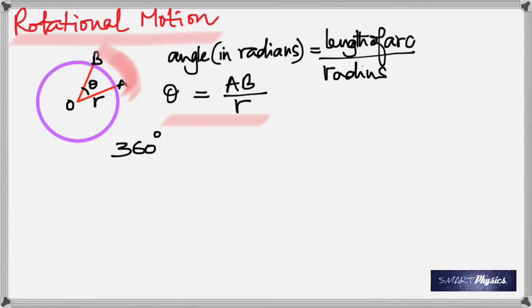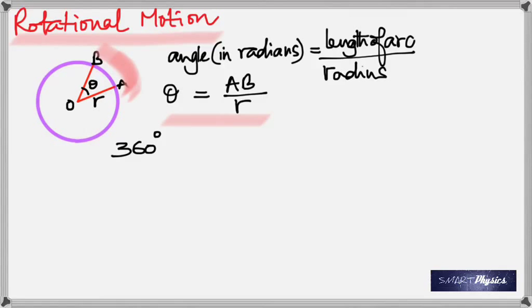The angle is just length divided by length, so technically it has no dimension — no units. 360 degrees equals how many radians? 2 pi.